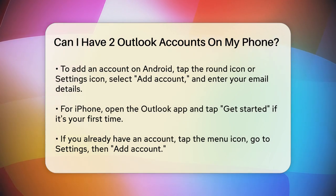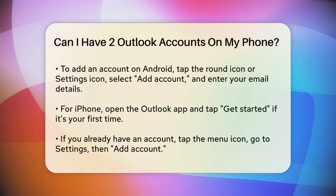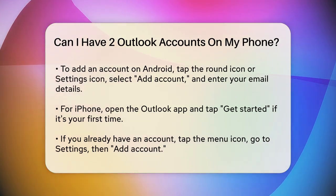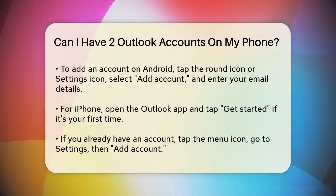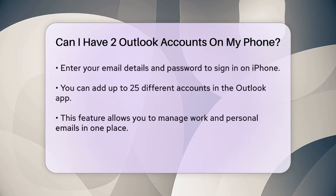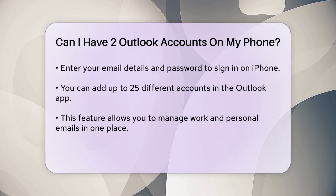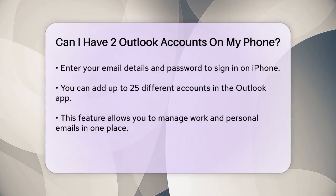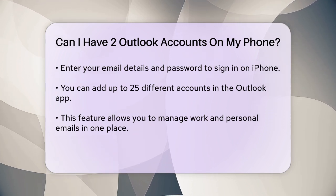For iPhone users, the process is similar. Open the Outlook app, and if you're using it for the first time, tap Get Started. If you already have an account set up, tap the menu icon on the upper left corner. Go to Settings, then tap Add Account. Enter your email account details, password, and sign in. You can add up to 25 different accounts in the Outlook app for both Android and iOS devices.